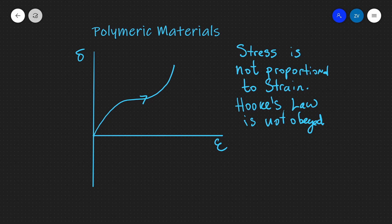Finally, let's look at how polymers behave. Rubber is an example. Polymers consist of long chains of molecules and behave differently: in their stress against strain curve, stress is not proportional to strain, which we can see because the graph is not a straight line through the origin. This also means Hooke's law is not obeyed. When we apply a force, we follow one curve — let's call it the blue curve.